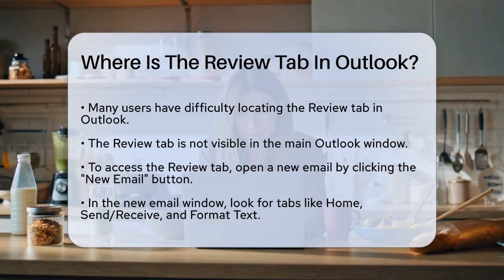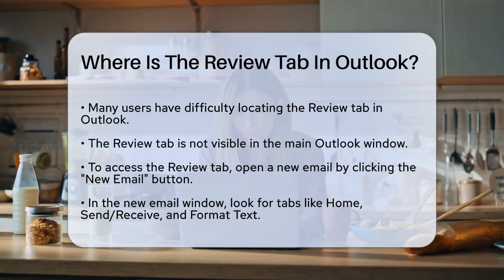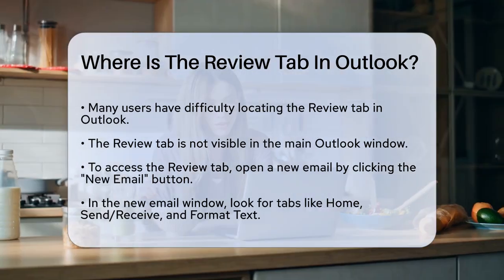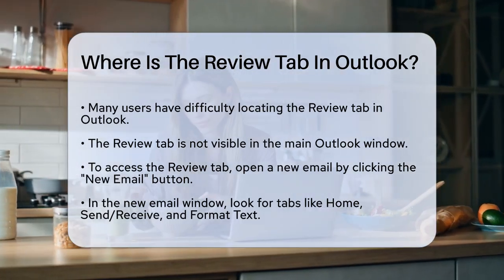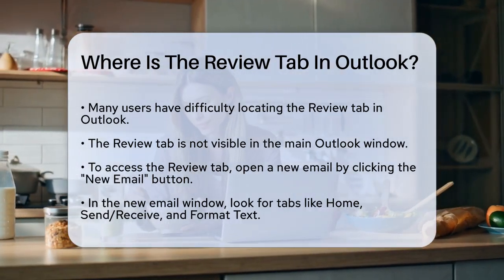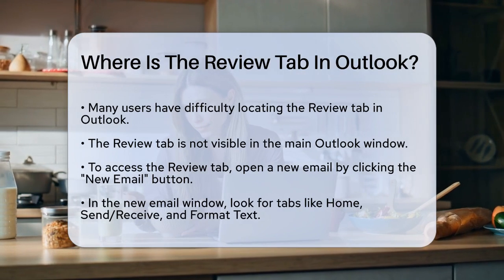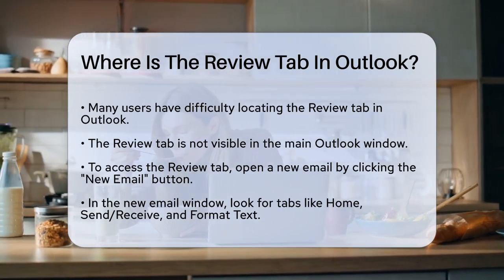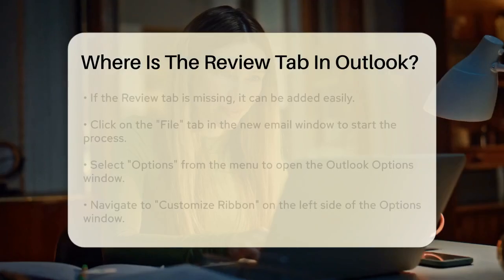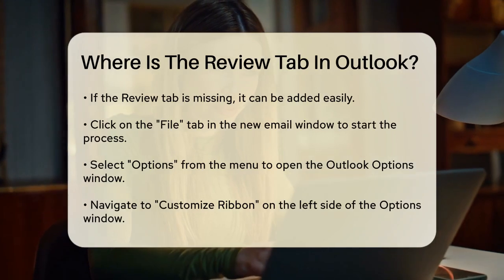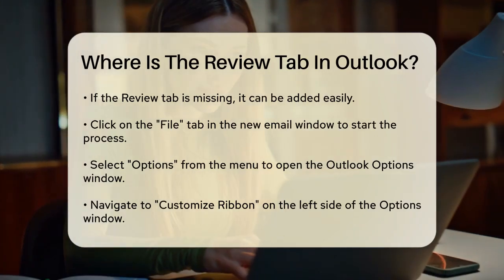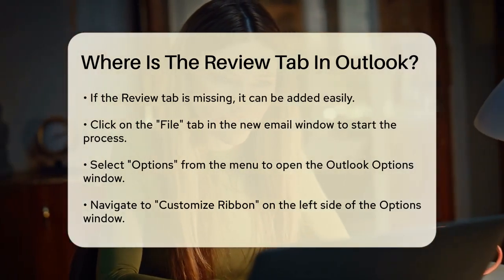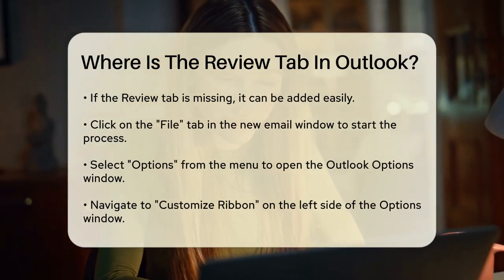First, let's clarify that the Review tab is not always visible in the main Outlook window. Instead, you need to open a new email to access it. When you click on the New Email button, a new window will pop up where you can compose your email. In this new email window, look at the top where you see the various tabs like Home, Send Receive, and Format Text. Here, you should see the Review tab.